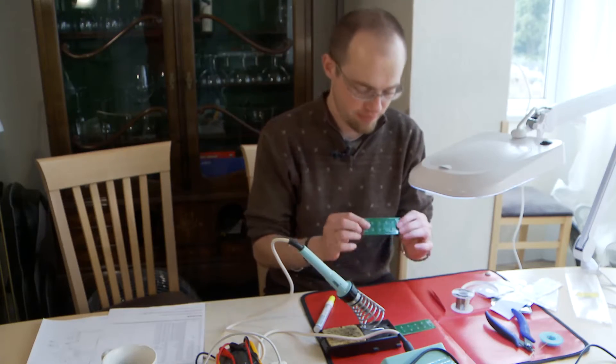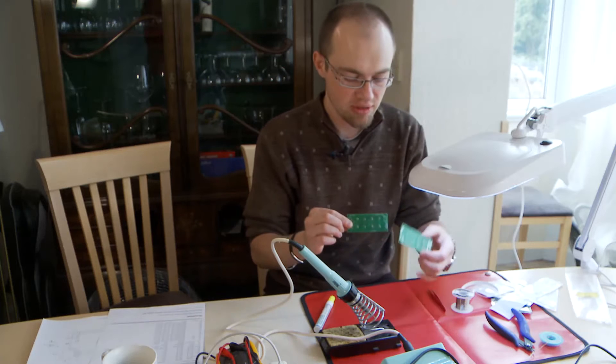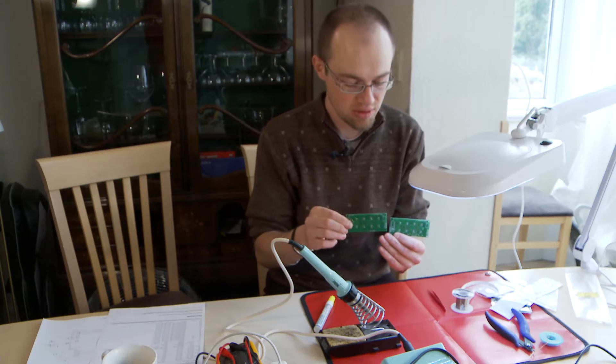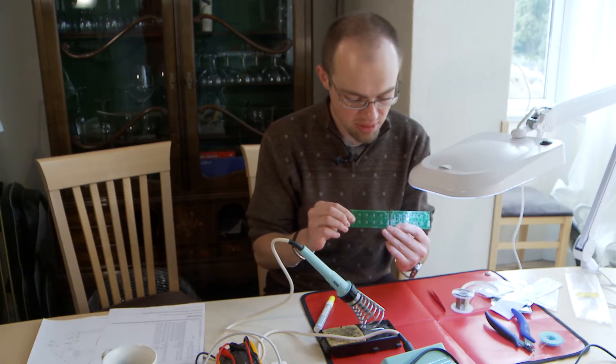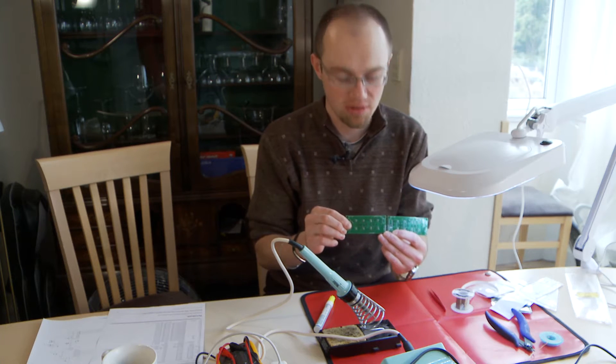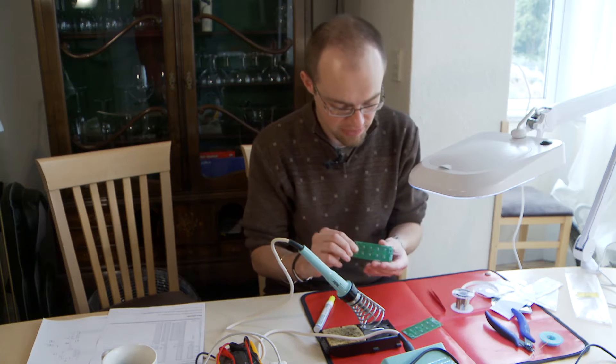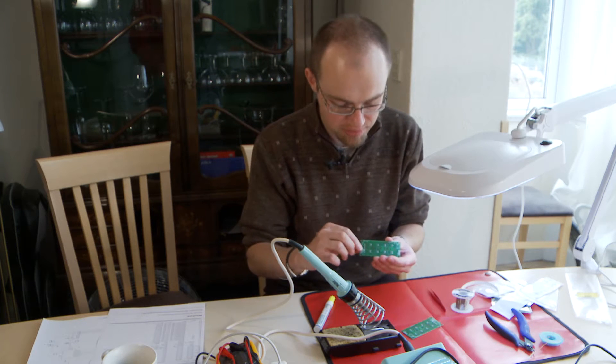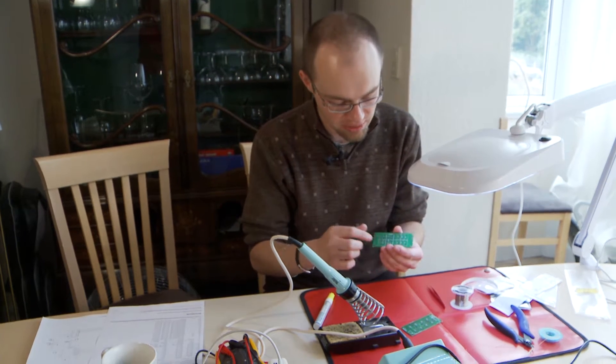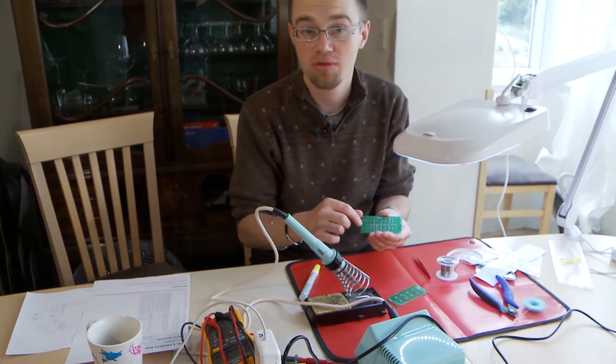When we have soldered all the 16 resistors of 270 ohms, it is time to solder the next 4 resistors of 10k and there are two on the top side and two on the bottom side which I am going to solder right now.